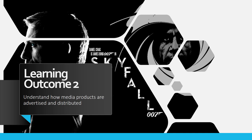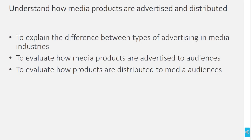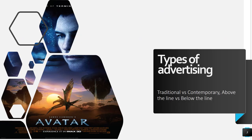This is learning outcome two, which is all about how media products are advertised and distributed. The main things we need to know are: explaining the difference between types of advertising, evaluating how media products are advertised, knowing some case studies about how things are advertised in different ways, and understanding how products are distributed — how they are passed out and given to the audience.